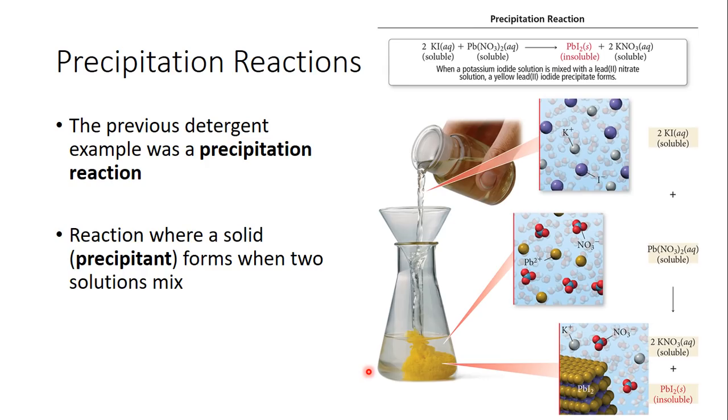So here is another example of a precipitation reaction where you take soluble potassium iodide and soluble lead nitrate and you pour the two together and you'll get an insoluble lead iodide form and the rest of the compounds will remain soluble. And the solid that forms is a precipitant. That's what that is called.